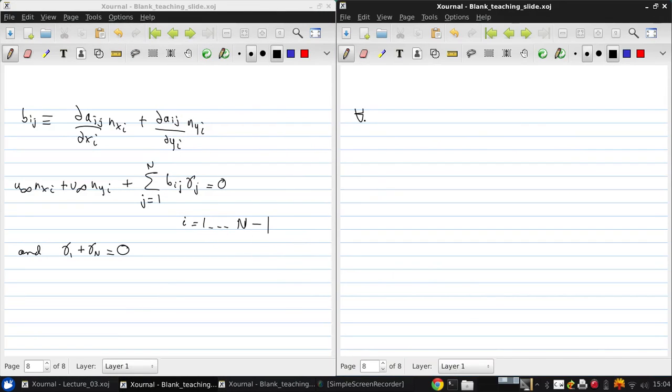So for the velocity, u(x,y), this is now anywhere in the full field, is u_infinity + sum over j of dK_j/dx(x,y) times gamma_j.